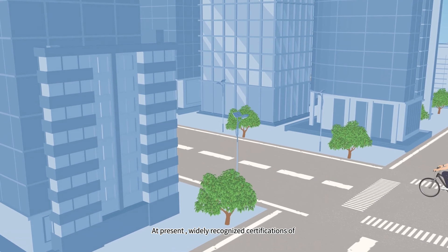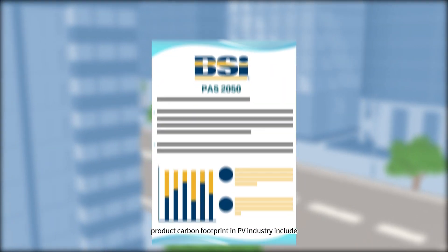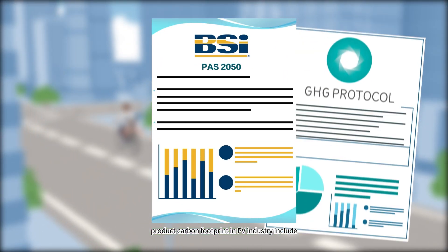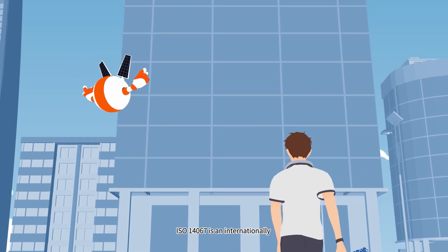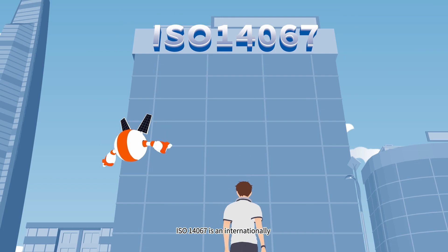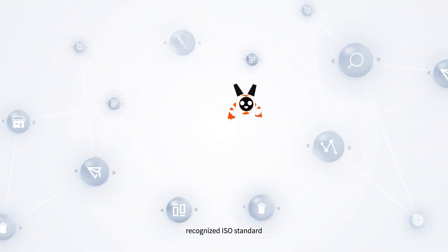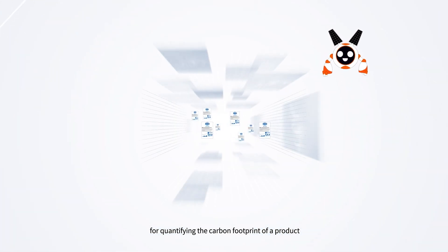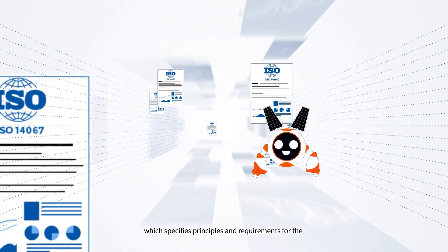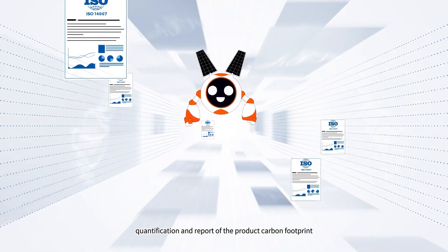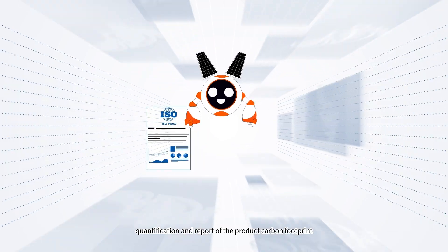At present, widely recognized certifications of product carbon footprint in the PV industry include PAS 2050, GHG Protocol, and ISO 14067 standards. ISO 14067 is an internationally recognized ISO standard for quantifying the carbon footprint of a product, which specifies principles and requirements for the quantification and reporting of the product's carbon footprint.